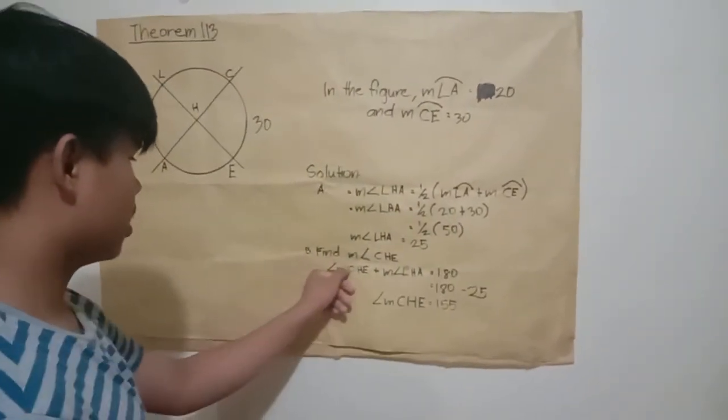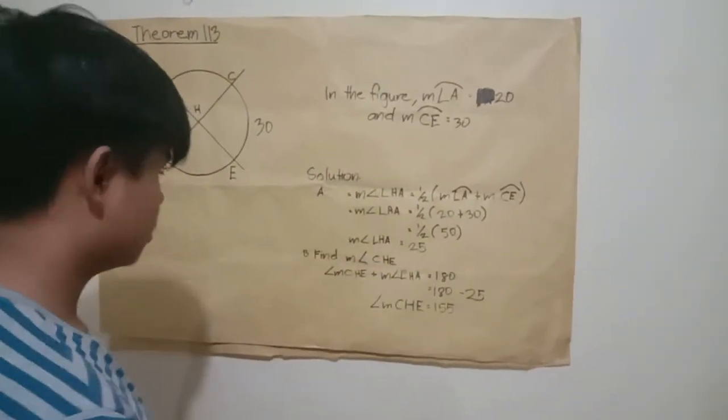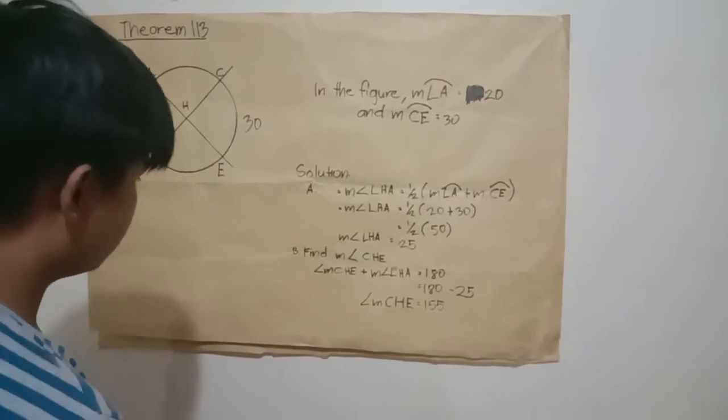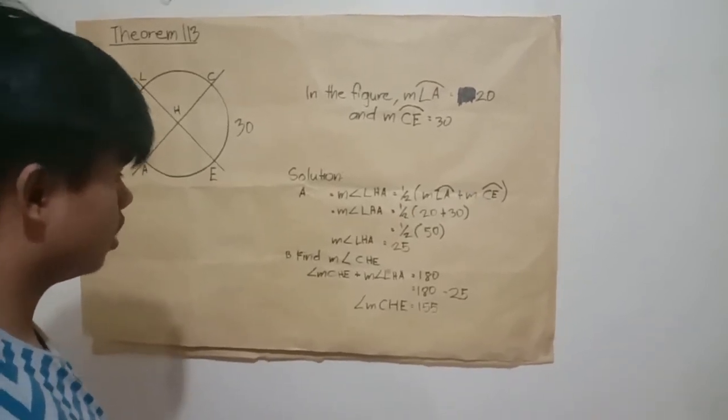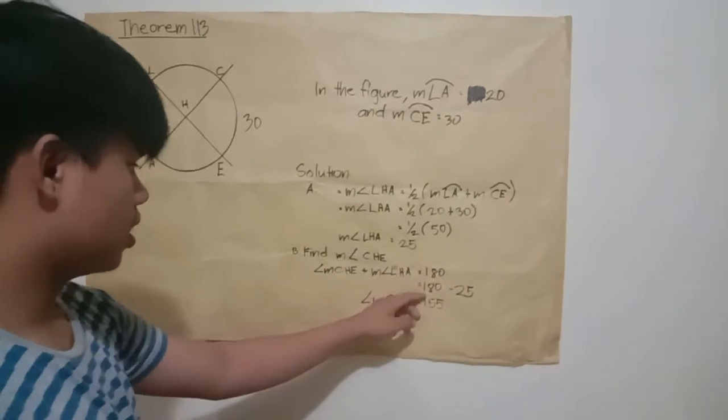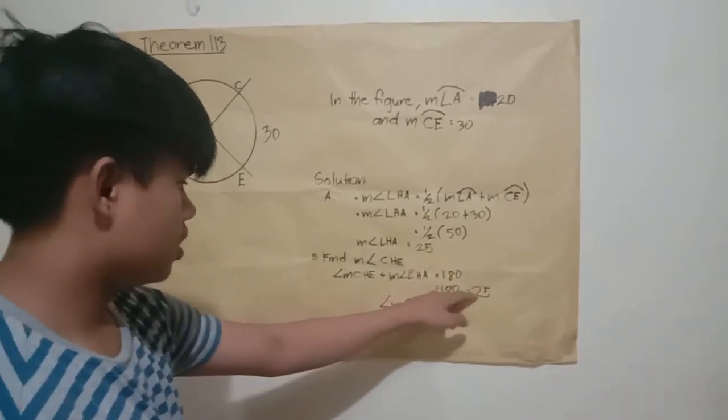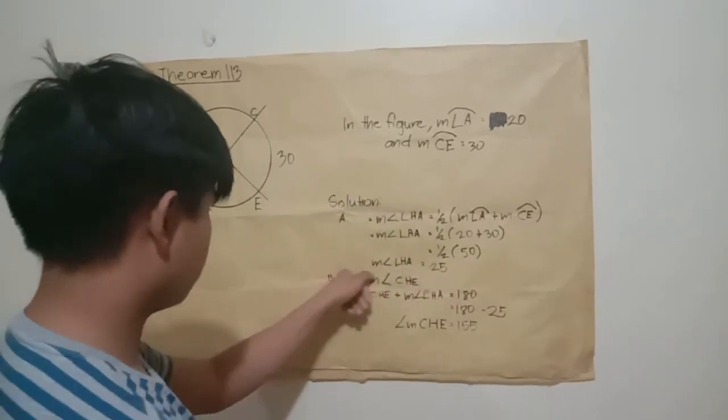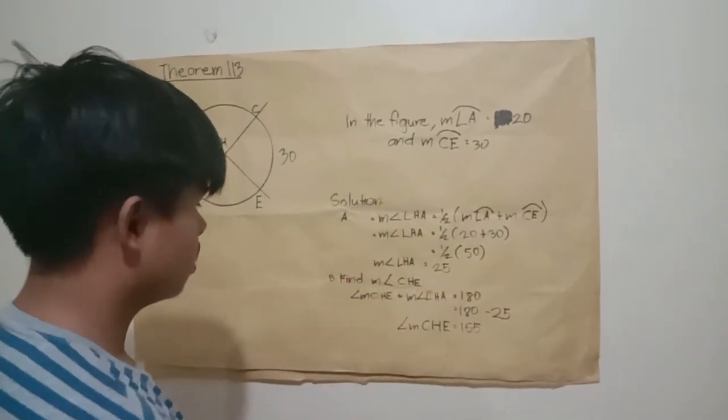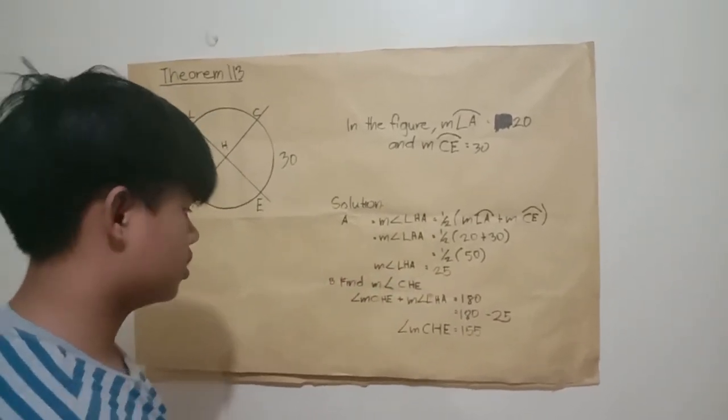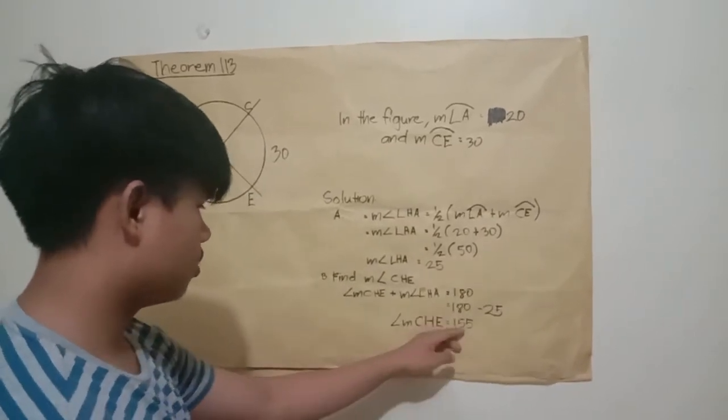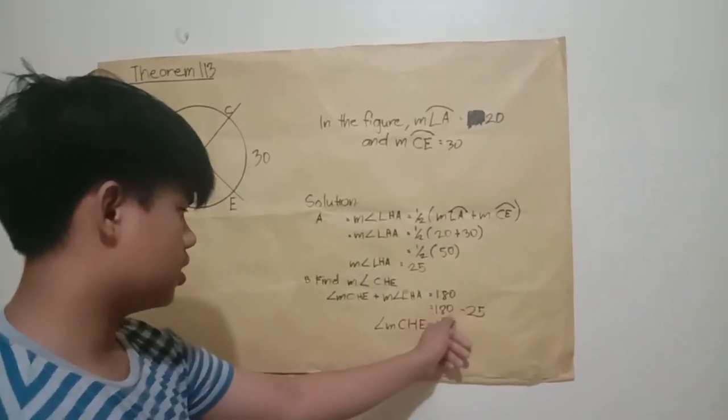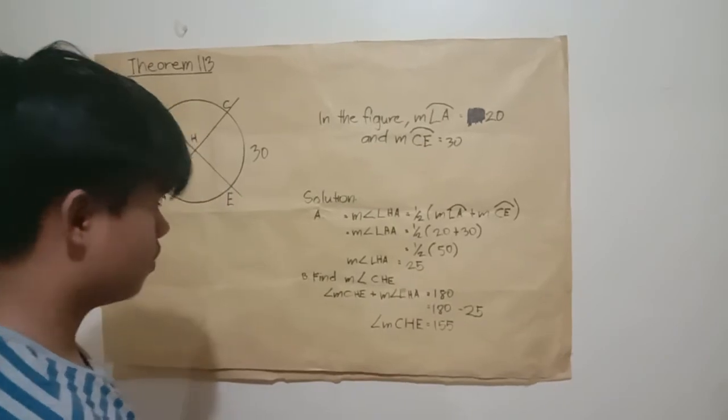Letter B, measure angle C. Angle measure C is 155 degrees, because 180 minus 25 equals 155.